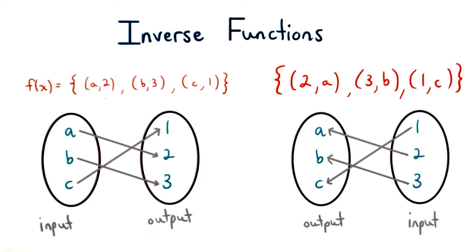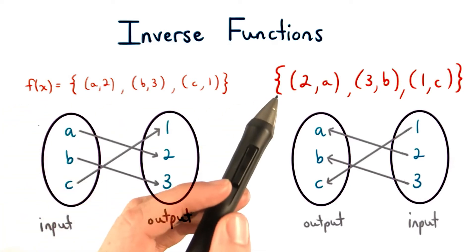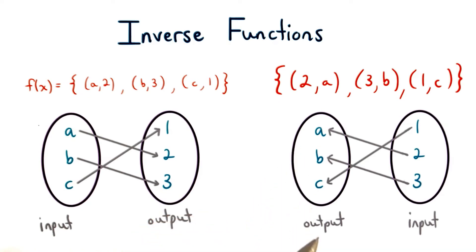Now, what you want to notice is that the inputs and the outputs switch for the inverse function. In other words, notice how a, b, and c were always the input for the first function we looked at. Whereas, in the inverse function, a, b, and c were all outputs.